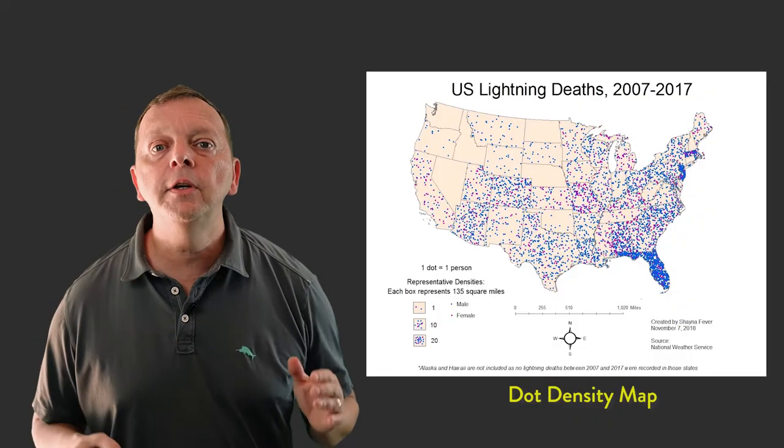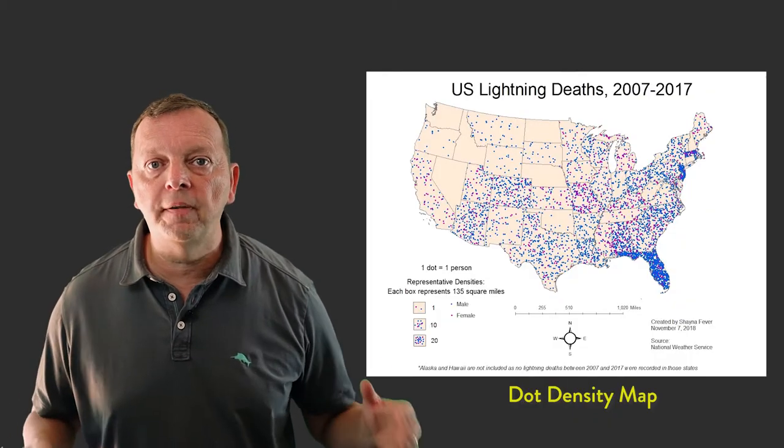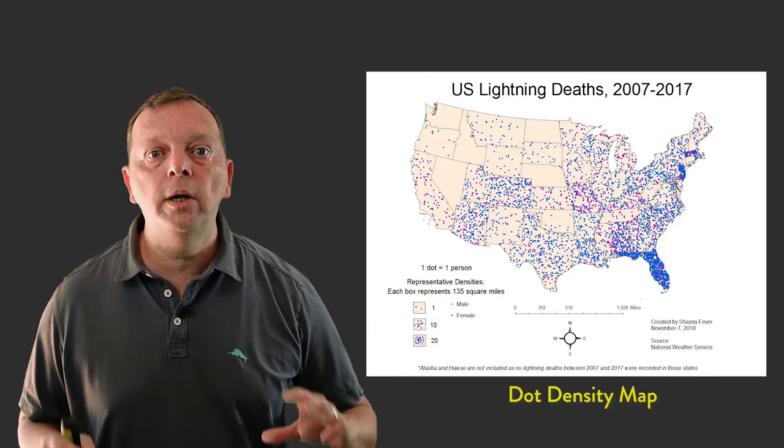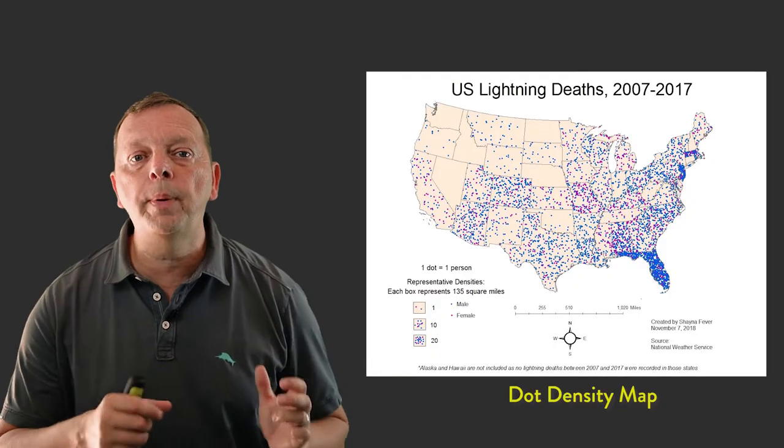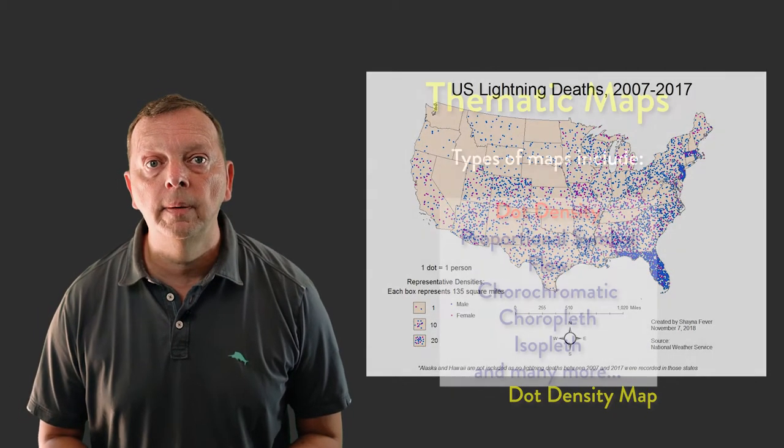Take this map, for example, of the deaths of people being struck by lightning. While the dots do not actually provide the exact location of each death, they easily represent, in general terms, the frequency where people are more likely to be struck and killed by lightning in the United States.